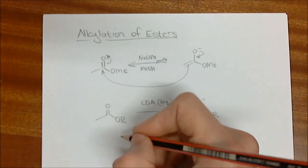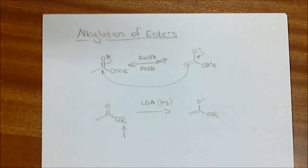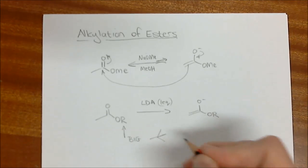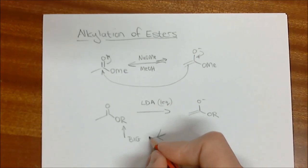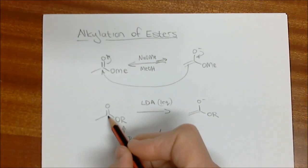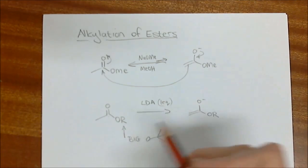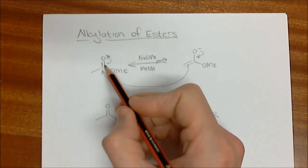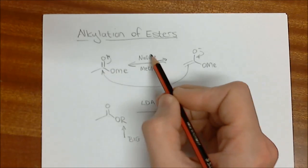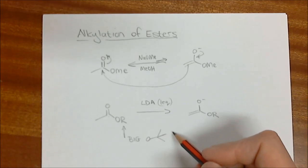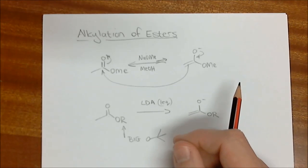Something else that we can do is make sure that this R group is very big. If we make sure that that group is big, like for instance being a tertiary butyl group, that being very big means that this becomes less electrophilic, or rather it's less susceptible for nucleophiles coming in. So those are the two things that we need if we're wanting to alkylate esters.